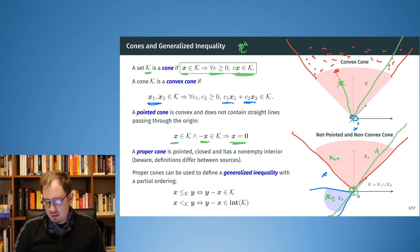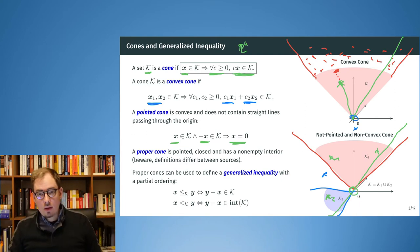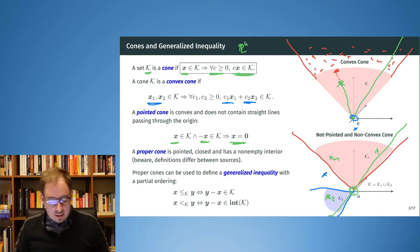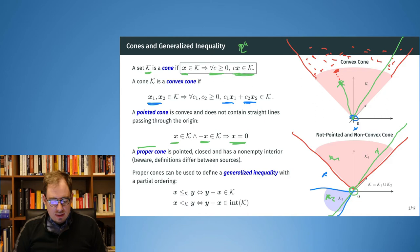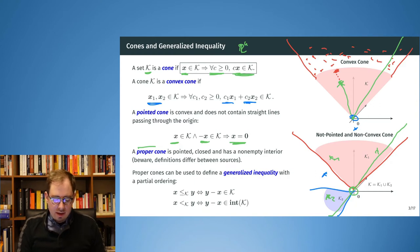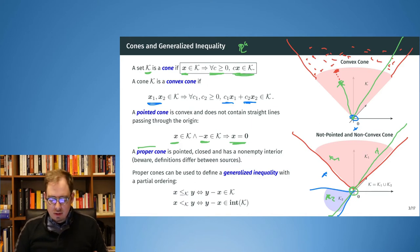In the lower example, there is a straight line passing through the origin and continuing, so it is not a pointed cone. The proper cones are the ones we like: they are pointed, closed, and have a non-empty interior. Note that different sources have slightly different definitions, but this is the most common. A proper cone is like an ice cream cone — the way we like our cones.